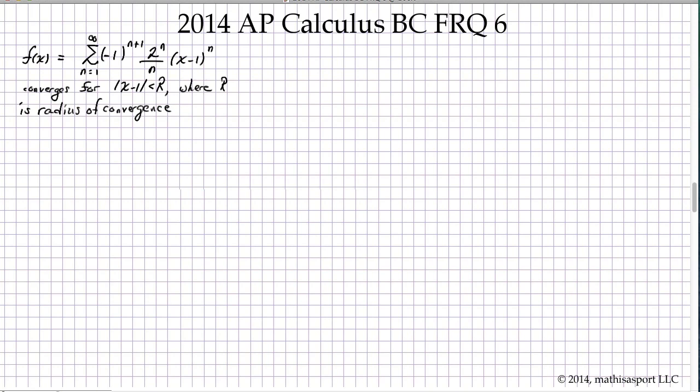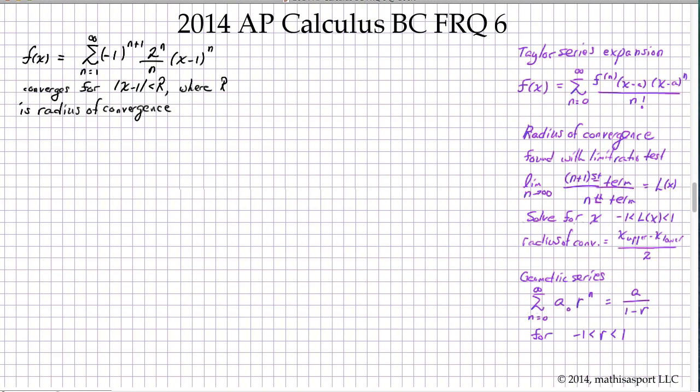We're given a Taylor series, though it is not about x equals zero, which would make it also a Maclaurin series. We're asked to find a radius of convergence, to differentiate the Taylor series both for a specific number of terms as well as for the general term. This particular Taylor series turns out to be geometric, and therefore we're asked to determine f prime and then integrate that. So there's quite a bit going on here.